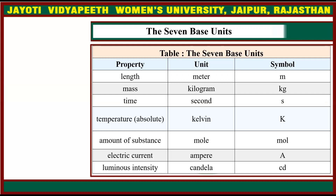For temperature, the unit is Kelvin with symbol K. Amount of substance is measured in moles with symbol mol. Electric current is measured in ampere, denoted by capital A. Luminous intensity is measured in candela, denoted by cd.